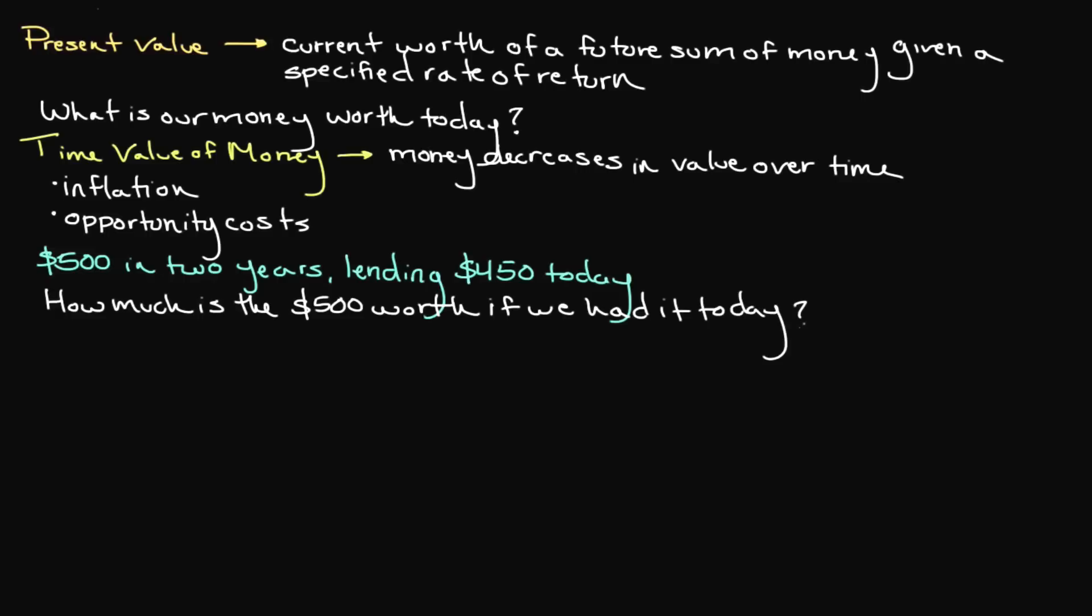Just so you have a visual of what we're doing here, I'm going to draw a timeline showing the process of discounting. When I was learning this concept myself, I found it was helpful to have a visual representation of the process. Here we have the $500 that we expect to receive two years from now, and we need to discount it to today to see how much it's really worth. On the left side, in parentheses, which denotes a negative value, we have the $450 that we may loan our friend.